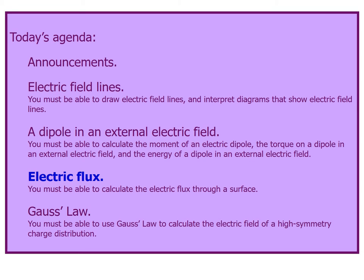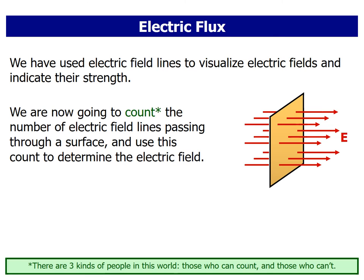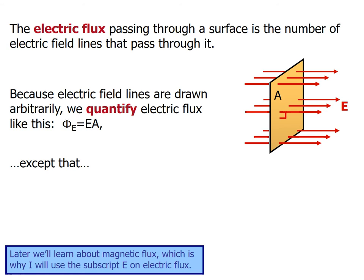Now we are going to look at electric flux. We have used electric field lines to visualize the electric field and indicate their strength. We are going to count the number of electric field lines passing through a surface and use this count to determine the electric field. Electric flux passing through a surface is the number of electric field lines that pass through it.